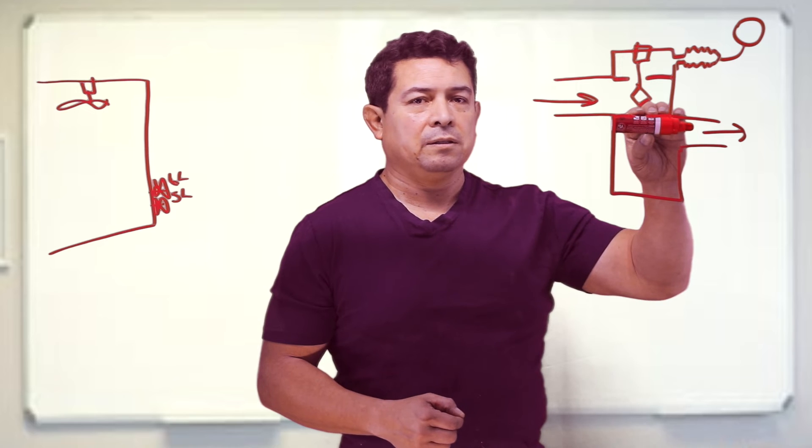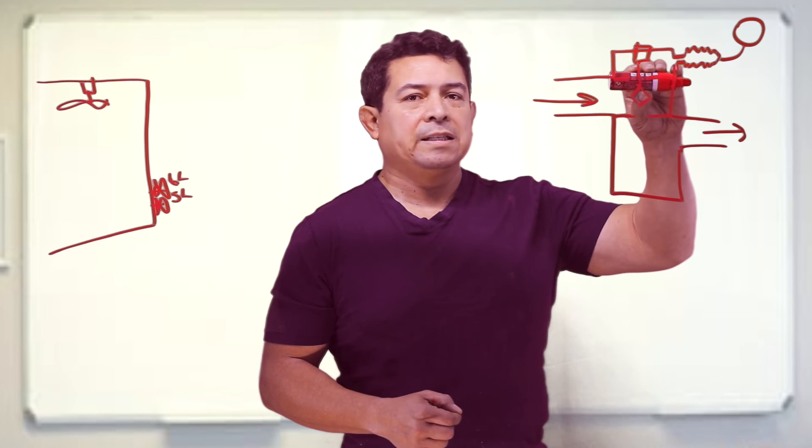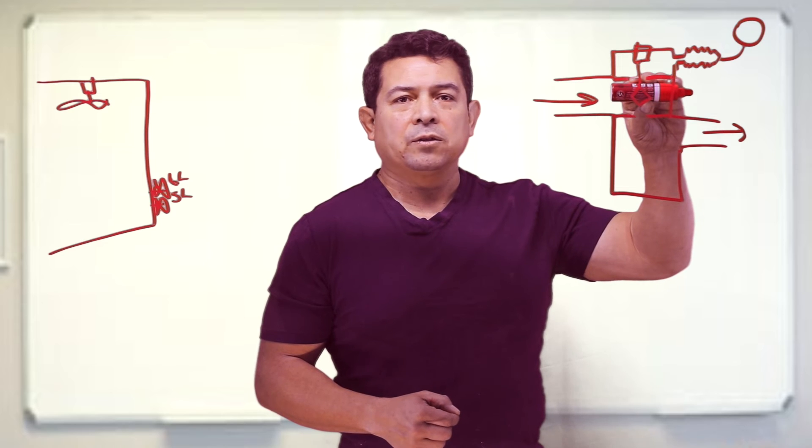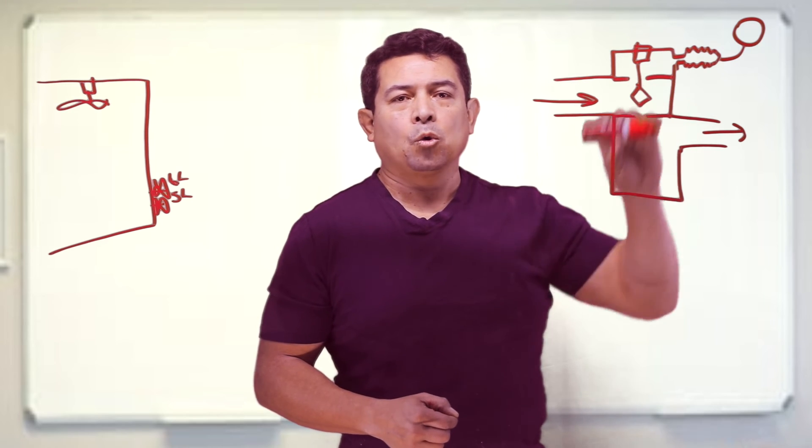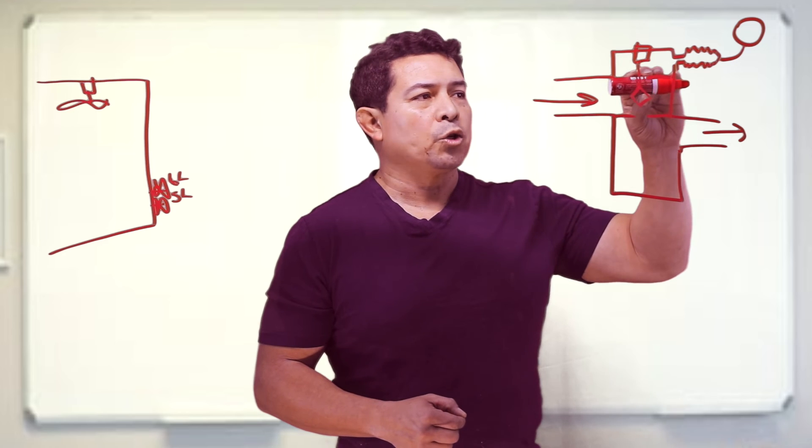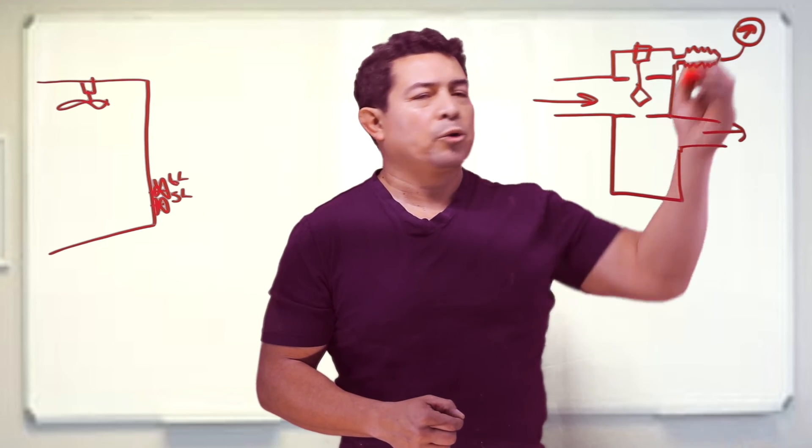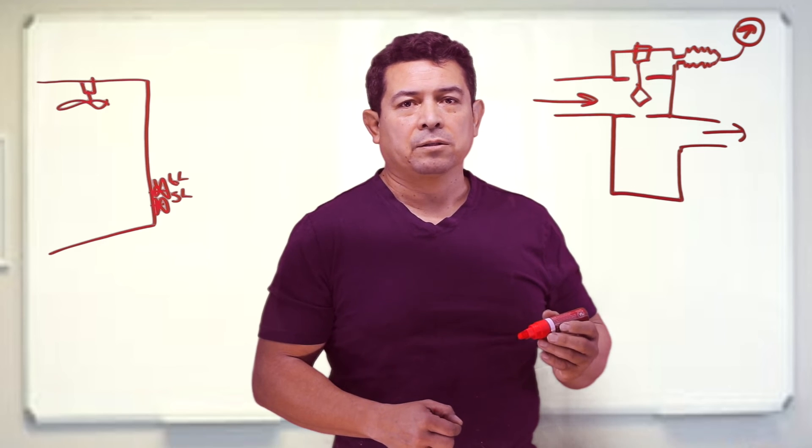So again this will be front seated, this will be back seated, and if it's just off of this then that's going to be your mid position or your cracked. You want it to be cracked or you want it to be mid position so that we can get an actual pressure reading on your gauge right there.